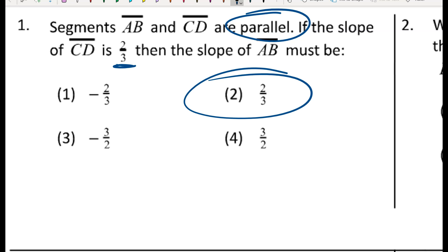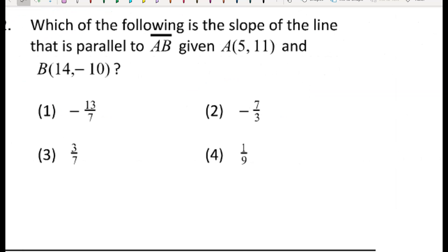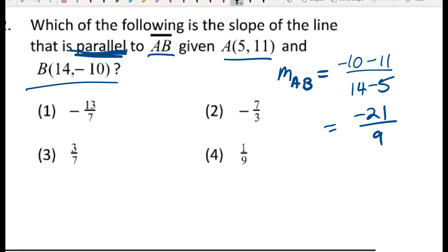For number two, it says which of the following is the slope of the line that is parallel to AB, given that A is (5, 11) and B is (14, -10). All I'm going to do is find the slope between A and B, because that should be the same as any segment parallel to it. So change in y: negative 10 minus 11 over 14 minus 5 gives negative 21 over 9.